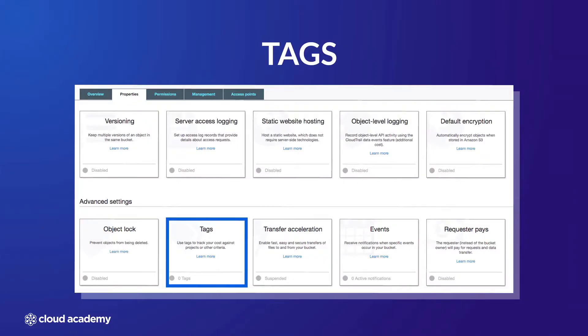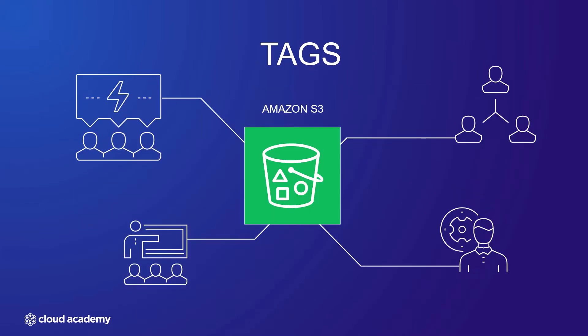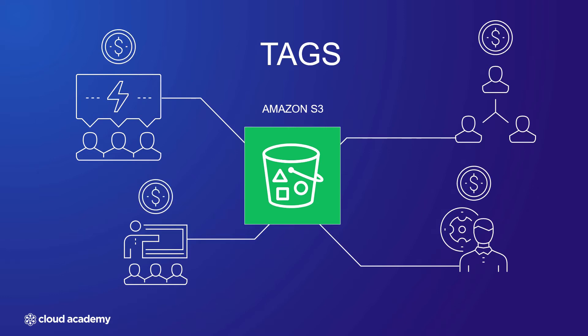Welcome to this short lecture explaining the use of cost allocation tags against your S3 buckets. When using Amazon S3, you are likely using it for a variety of different use cases and solutions across multiple business units and departments, each with different cost centers. This can make it difficult to manage budgets across your organization.